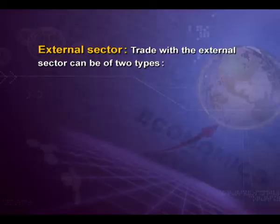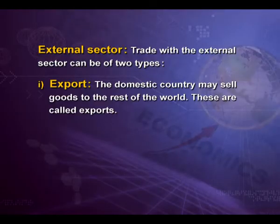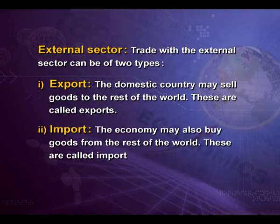All countries of the world are also engaged in external trade. The external sector is the fourth important sector in our study. Trade with the external sector can be of two types: export and import. The domestic country may sell goods to the rest of the world — these are called exports — and the economy may also buy goods from the rest of the world — these are called imports. Besides exports and imports, the rest of the world affects the domestic economy in other ways as well. Capital from foreign countries may flow into the domestic country, or the domestic country may be exporting capital to foreign countries.